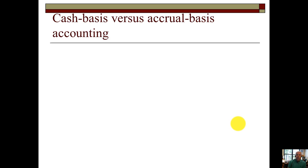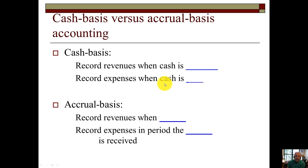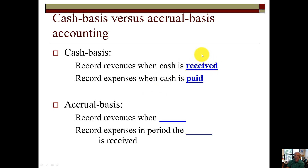So cash basis versus accrual basis accounting — first, let's talk about what cash basis means. Basically, when we talk about cash basis accounting, what we're saying is that we record our revenues only when the cash is received, and we record expenses only when cash is paid.